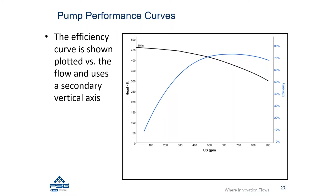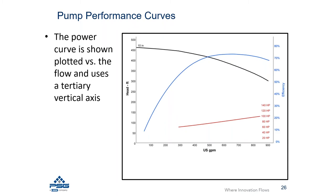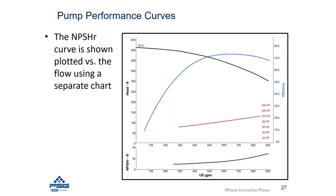You can typically operate the pump further to the right of the best efficiency point, but efficiency will begin to decline. At some point the pump manufacturer will limit the maximum allowable flow rate because efficiency and reliability decline as you move too far to the right. Another characteristic on the performance curve is power, typically presented in horsepower or kilowatts, plotted against yet another axis — shown here in red.